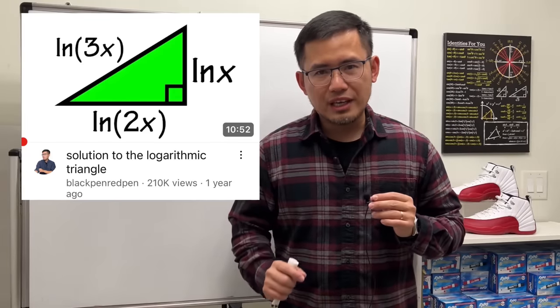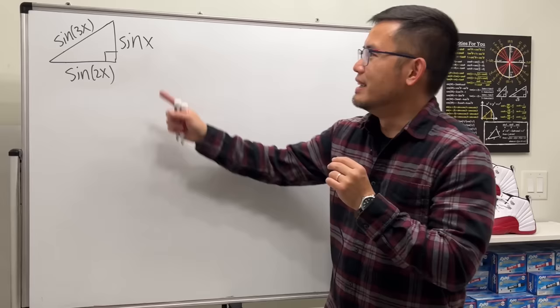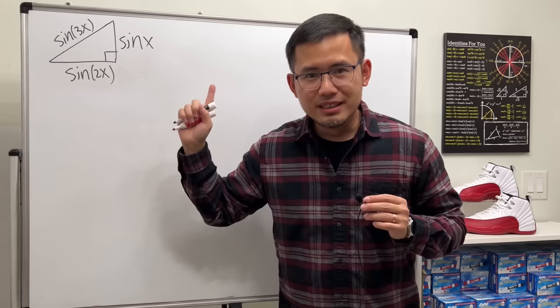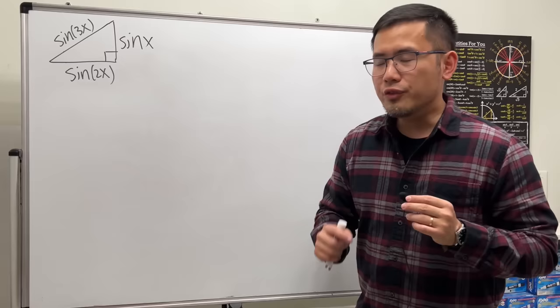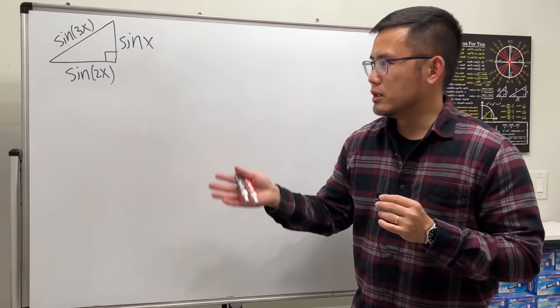Last year I gave you guys a log triangle, so this year let me give you guys a sine triangle. Right here, it's a right triangle with sides sine x, sine of 2x, and the hypotenuse being sine of 3x. And to my surprise, this actually works out very nicely. So if you want to try it first, go ahead and pause the video and try to figure out for what x will make this into a legitimate right triangle. If you don't want to try it, just watch the solution.